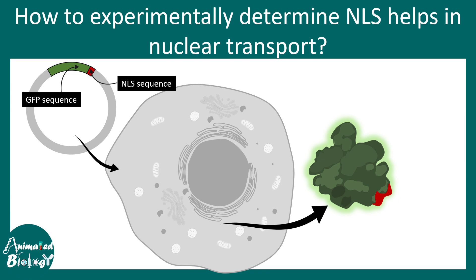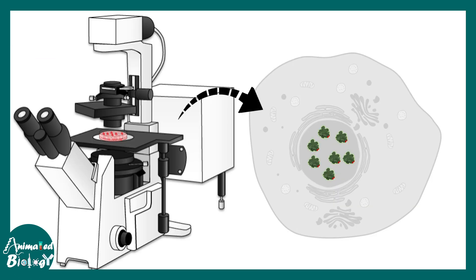Otherwise GFP is a cytosolic protein, so it is expected outside the nucleus. But once NLS is attached and imaging is done, one can clearly see that the GFP would be localized into the nucleus and the fluorescence would come from the nucleus. This is one way to understand the nuclear localization signal and its role in nuclear transport.